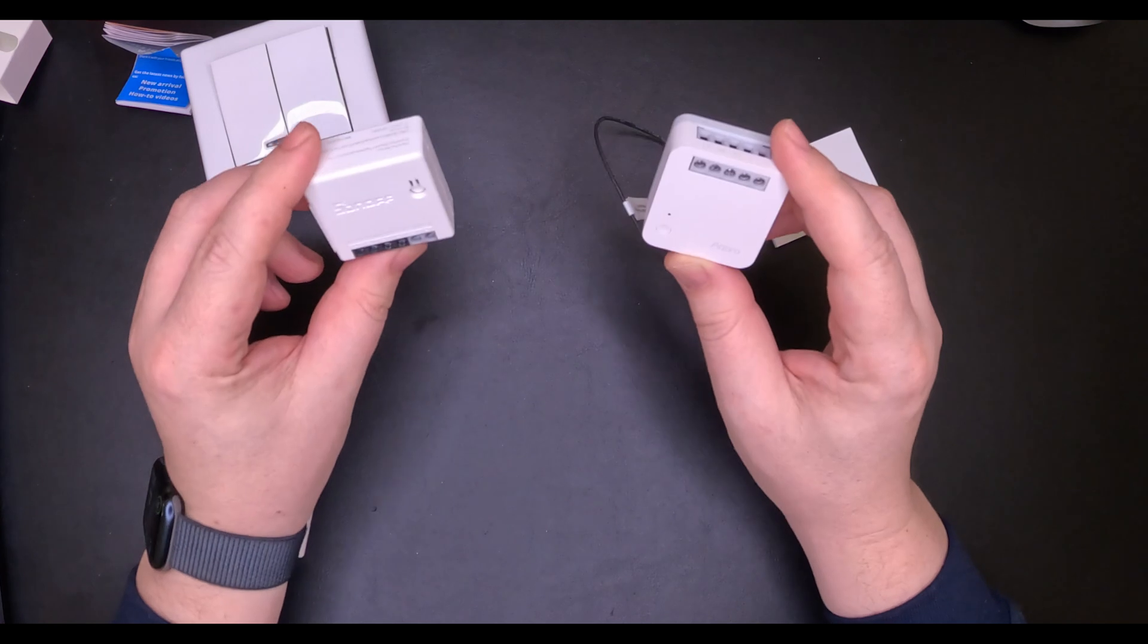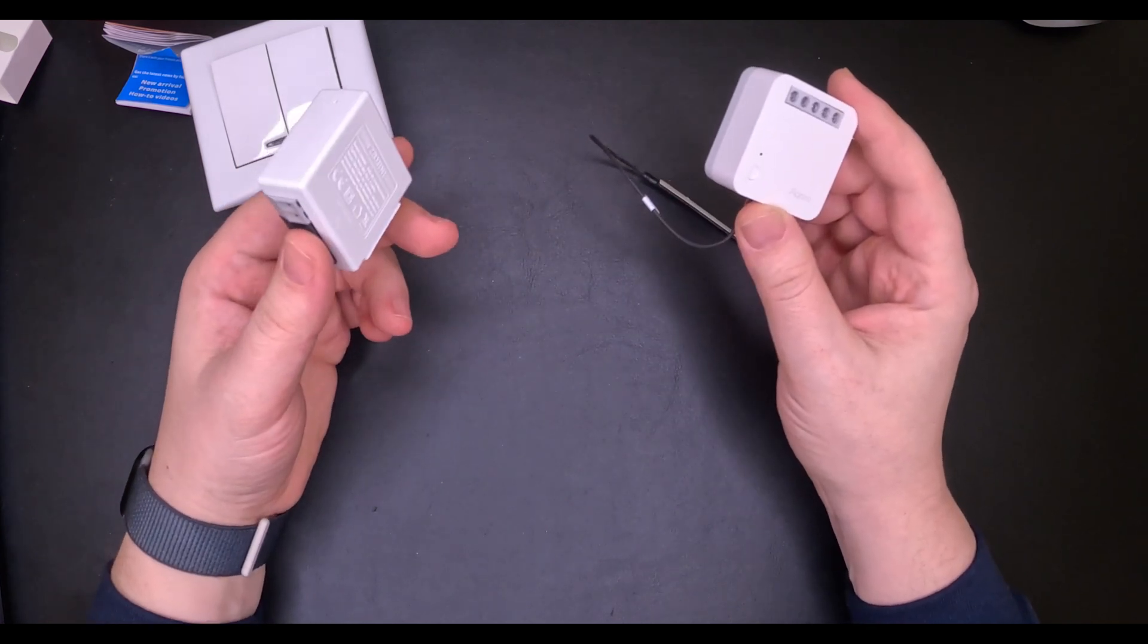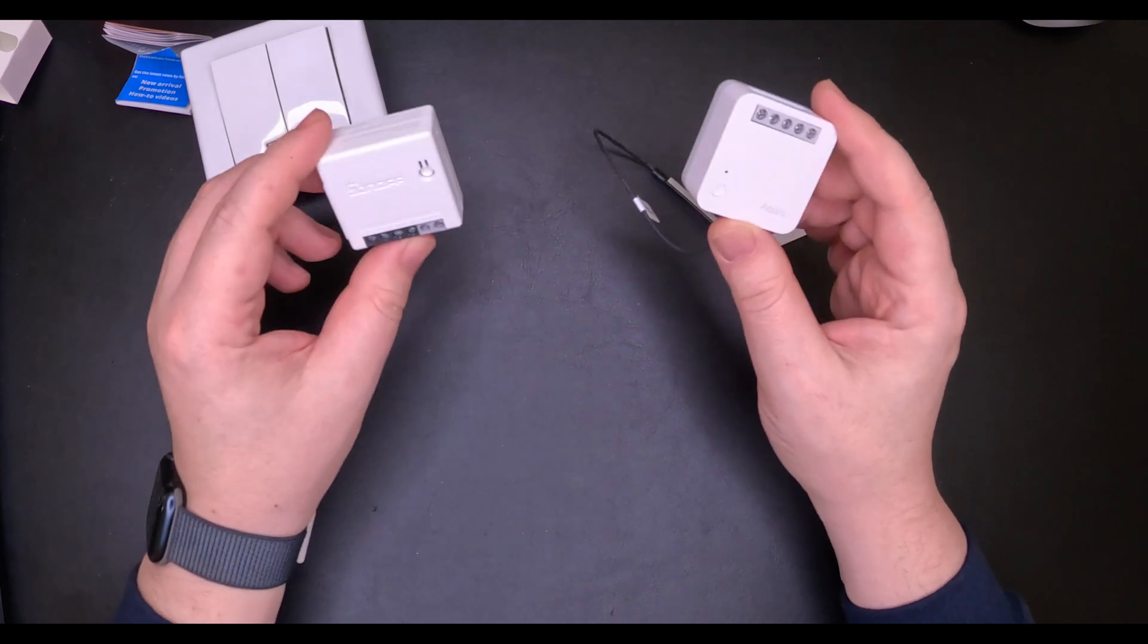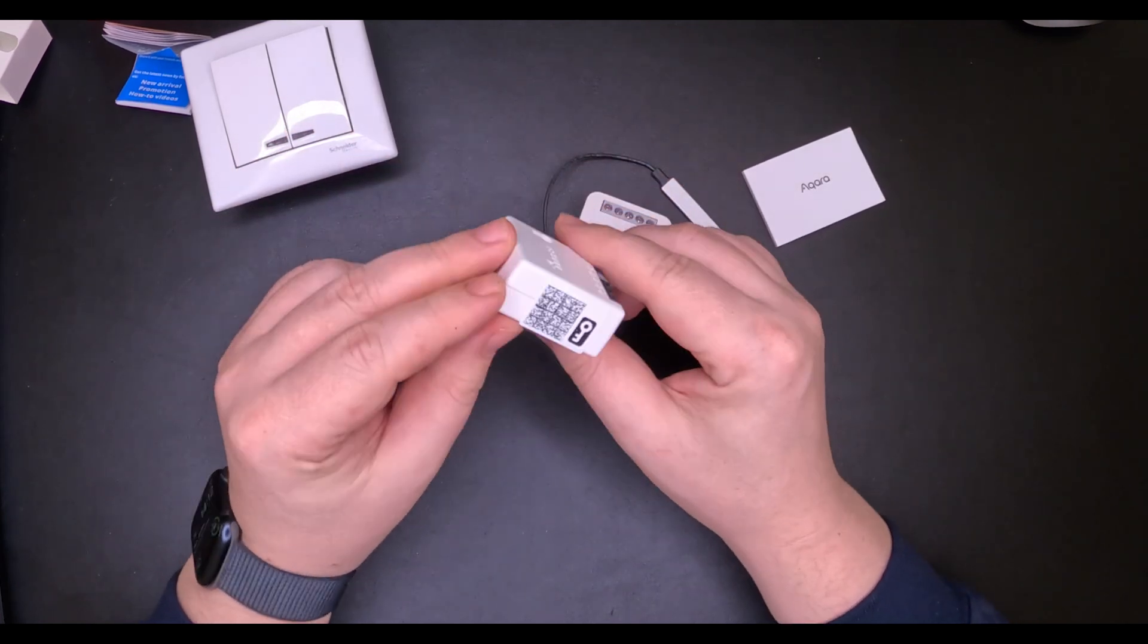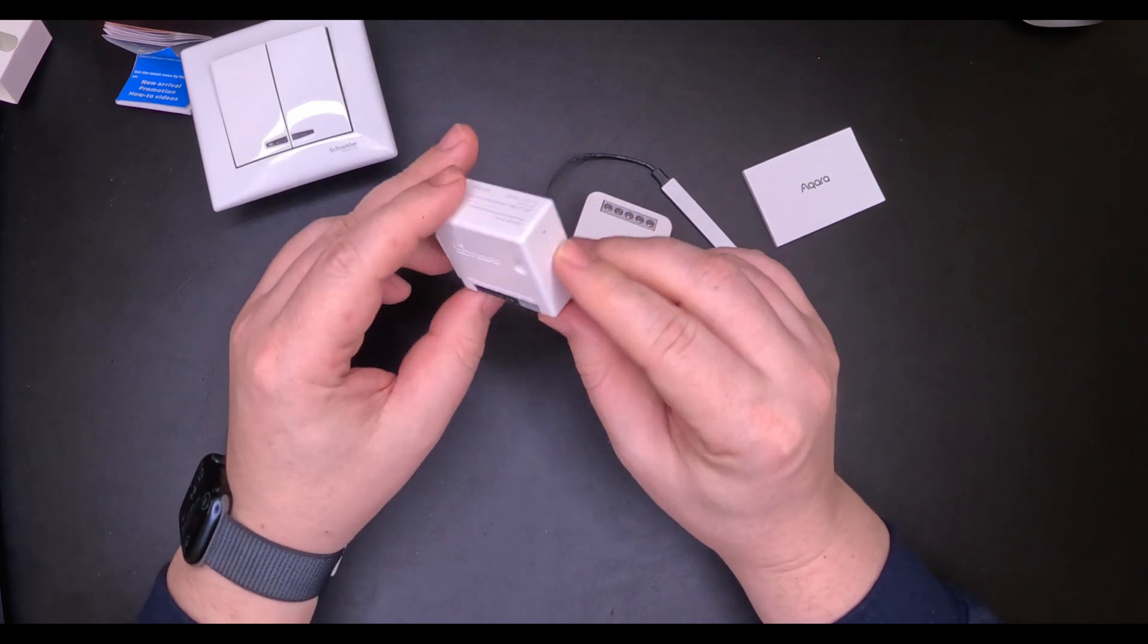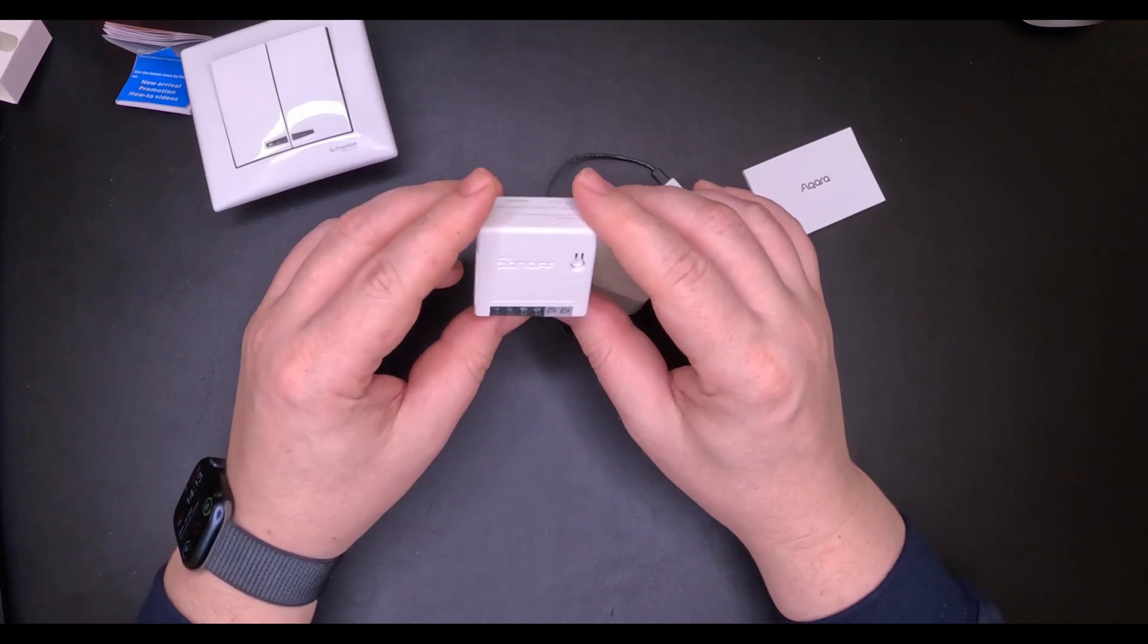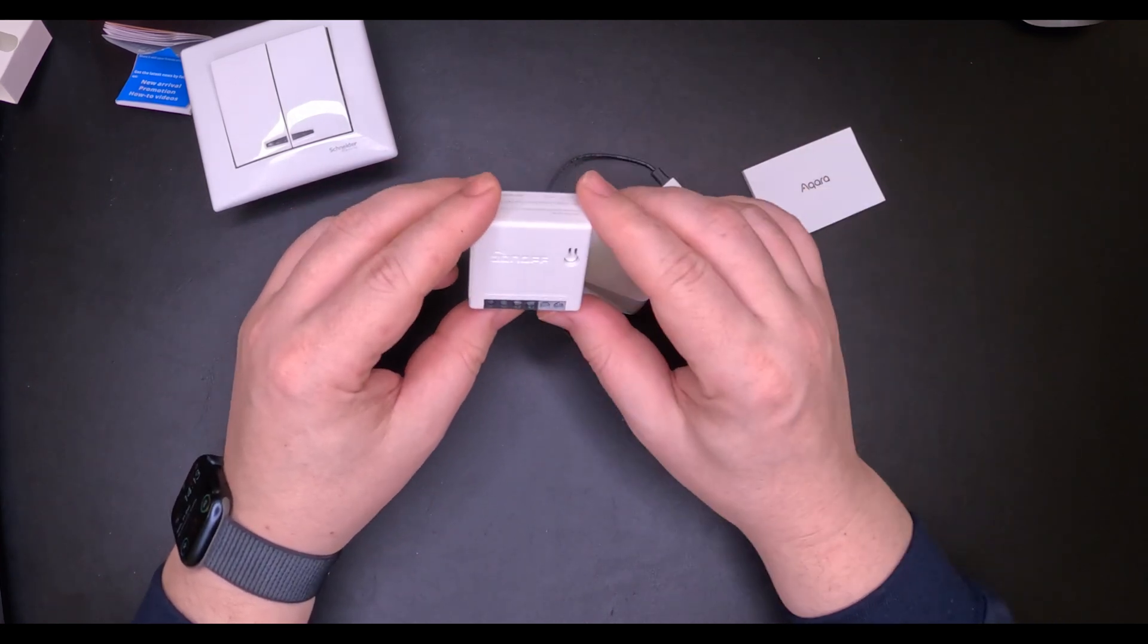Which one you should get then? Well, even if they look similar, there is a big major difference between them in terms of functionality. The Sonoff ZB Mini is intended, as we spoke before, to be mounted behind the switch, so you can make it smart and also has the router capability that will extend your Zigbee network inside your house.